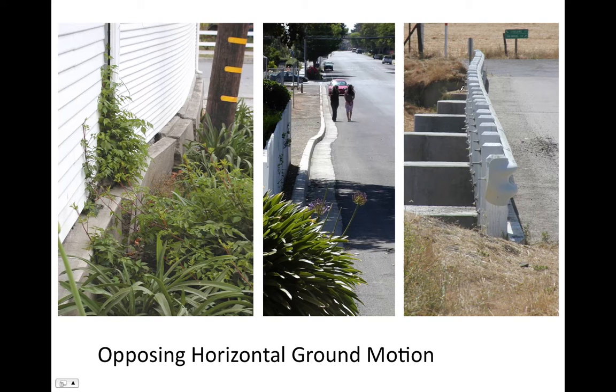You can see the land moving this way on one side and this way on the other side, so the boundary actually runs somewhere through here. Same thing in this case — it's moving that way on one side and this way on the other, with the boundary somewhere right there. Once again, this side is moving this way and that side is moving that way, with the boundary in between. You can see that opposing horizontal ground motion in these images.